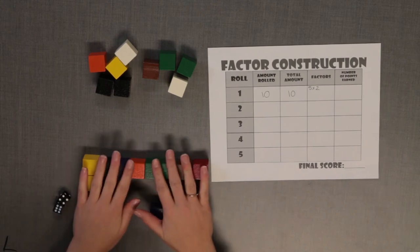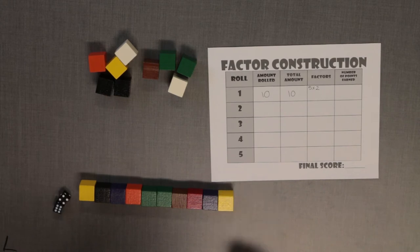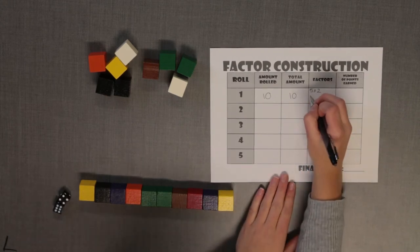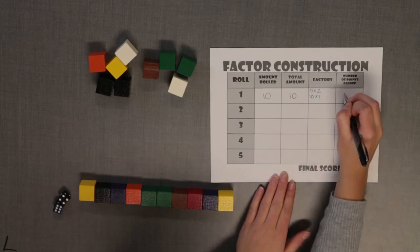Record the factor pairs on the sheet. You earn one point for each factor pair for a total of two points. Since you have found two pairs of factors, record the number of points earned as two. Your turn ends.